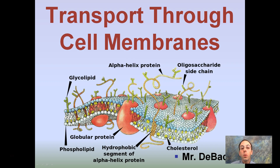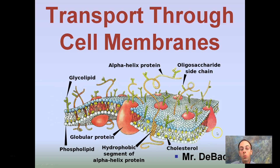Here we're going to look at transport through cell membranes. We saw a little bit about the cell membrane in a previous video. Now we're looking at learning more about the actual transport process that occurs in order for things to pass through. Remember, our cell membrane is semi-permeable, meaning it only allows certain things to come through.